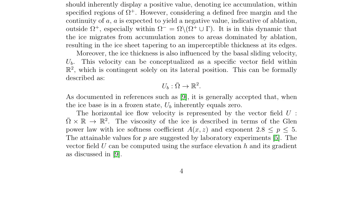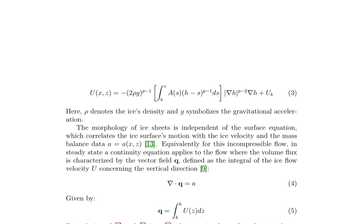This formulation is essential for understanding the dynamics of ice sheets and their response to climate change. The paper formulates a mathematical model for the morphology of ice sheets, incorporating the impact of gravity and ice flow velocity. The surface elevation h is governed by equation 6, derived from the continuity equation for incompressible flow and the correlation between the ice surface motion and the mass balance data. This equation is simplified to equation 7 when the coefficient a(x,z) is assumed to be constant.